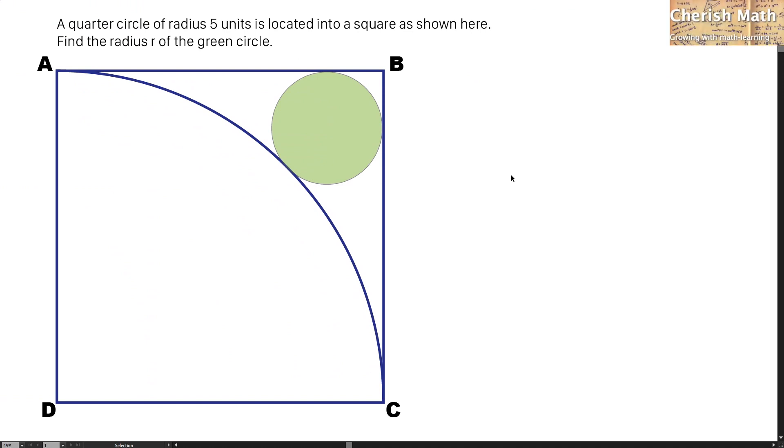Say hi from Chavish Math. This is the question. A quarter circle of radius 5 units is located into a square as shown here. Find the radius R of the green circle.